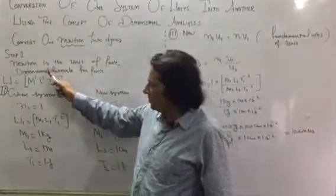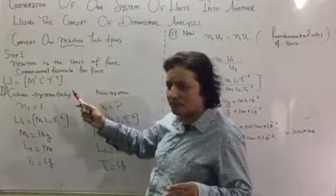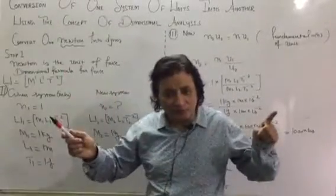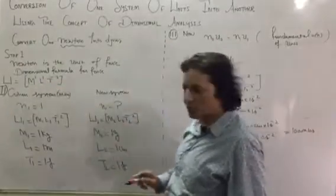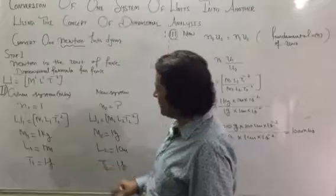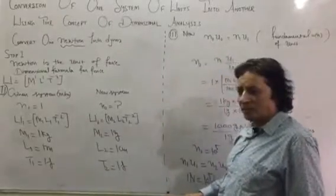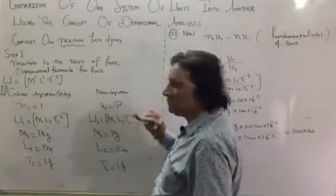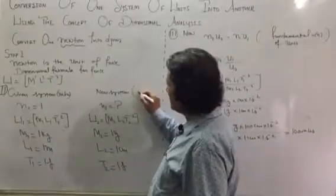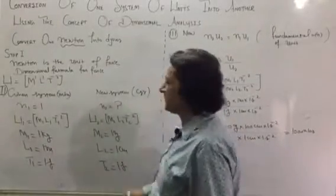Step number one: Newton is the unit of force. The dimensional formula for force is M1 L1 T minus 2. Now, given system is MKS, we know. New system, we also know that is CGS.